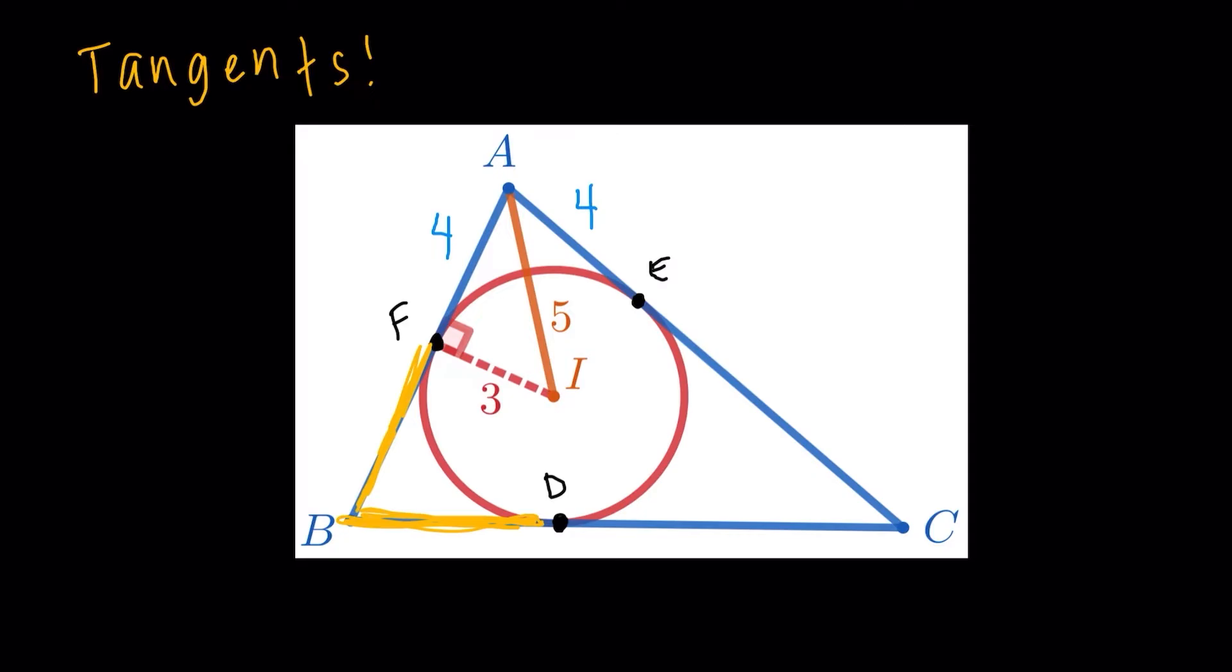And then the last one, we're going to have EC. Let's highlight this in green. So EC would be equal to DC because they are just the same tangent from point C.